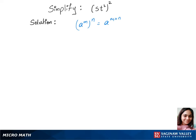Let's first separate the whole square between those two variables, so that's s squared times t squared, whole squared. We can write this using the product rule: t, the base, to the power 2 times 2. This gives us s squared times t to the power 4. This is our answer.